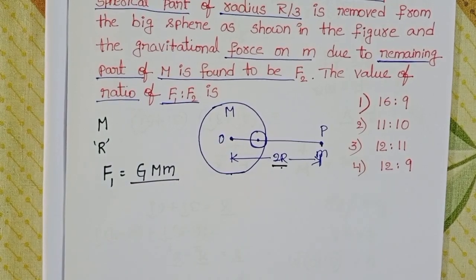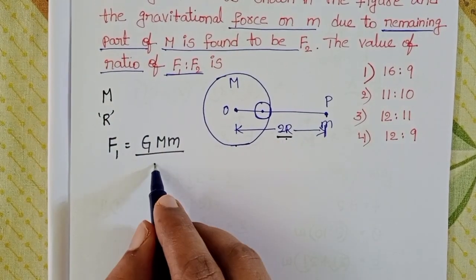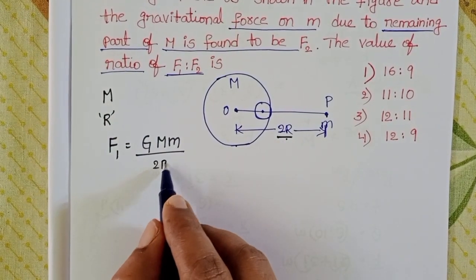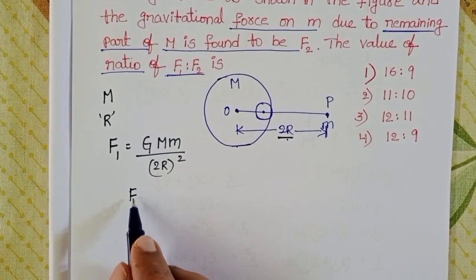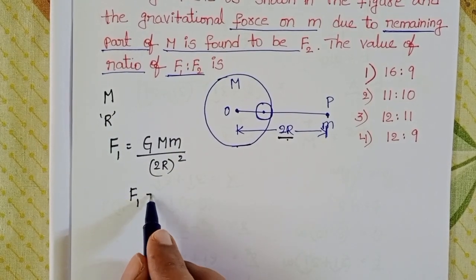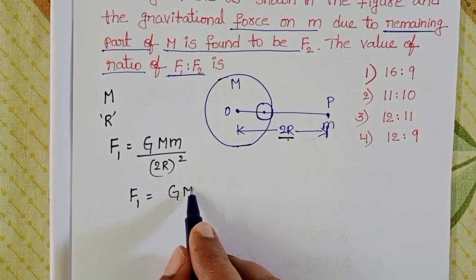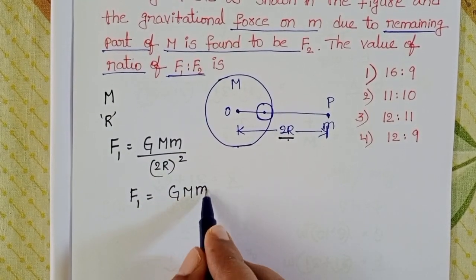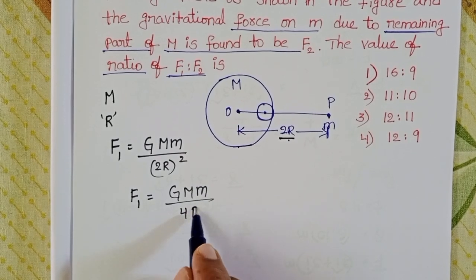Here the distance is 2R, so we take (2R)² = 4R². Then the gravitational force of attraction F1 becomes G·M·m / 4R².